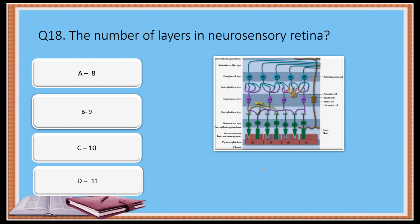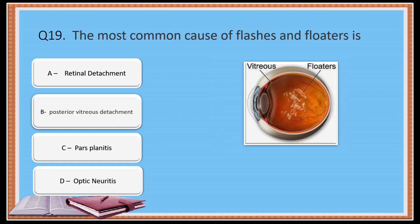Question 19: The most common cause of flashes and floaters is — Option A: Retinal detachment. Option B: Posterior vitreous detachment. Option C: Pars planitis. Option D: Optic neuritis.